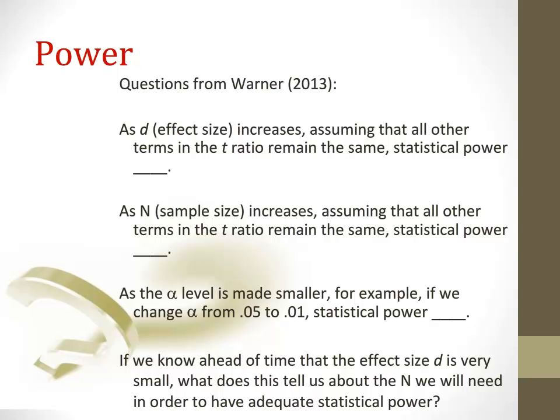What if we had the opposite question? If we know ahead of time that our effect size is going to be very large, what does that tell us about the n that we need in order to have adequate statistical power? Well, basically the opposite. If our effect size is large, then our n might not need to be very large. In fact, we may only need about 52 participants in this case.